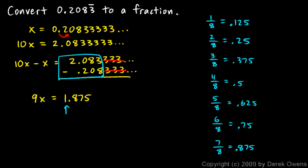So this 0.875 is the same as 7/8. So 1.875 is 1 and 7/8. And I'll write this as a fraction. I'll write 9x is 1 and 7/8. And 1 and 7/8 can be written as 15/8. So I get 9x is equal to 15 over 8.